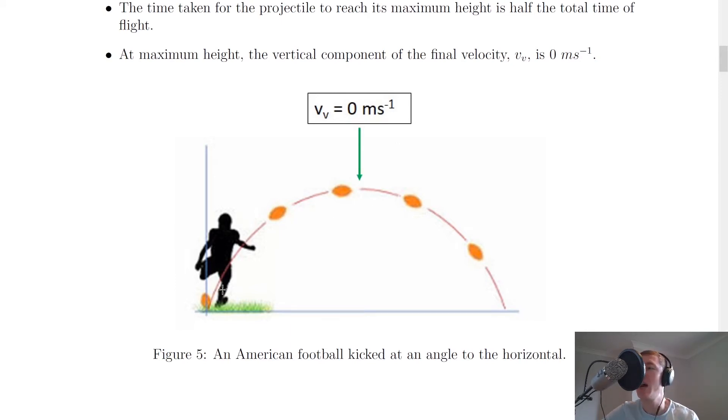Because that way we can simplify our motion into two identical halves where this motion would take a certain time and this motion would take the same time to reach the ground. We would therefore have an initial vertical and horizontal velocity from here and a final vertical velocity of zero at this point.